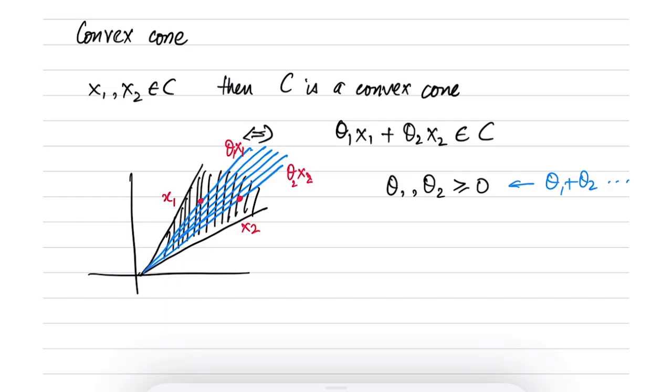And clearly because this cone lies inside C, so this cone which I am calling θ1x1 plus θ2x2 lies inside of the original cone C. Therefore, this C is a convex cone. So this is the intuition behind using such a definition.